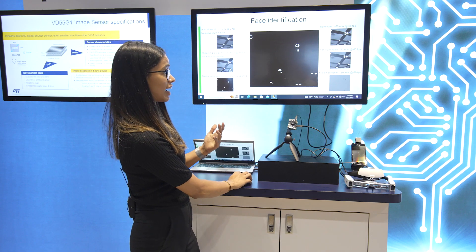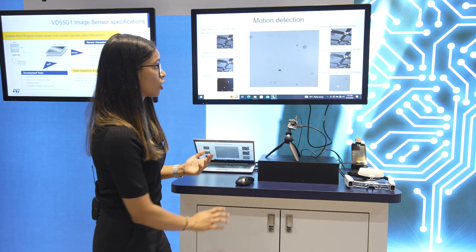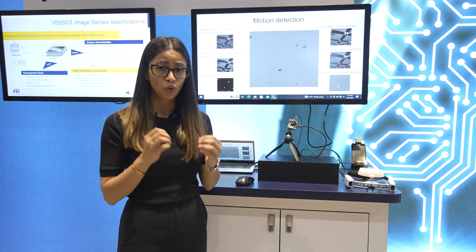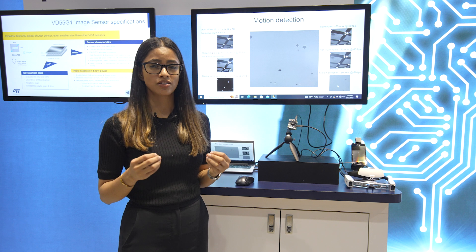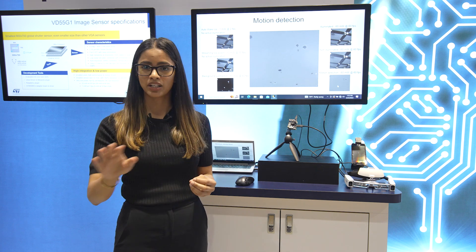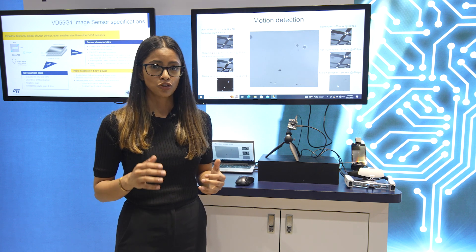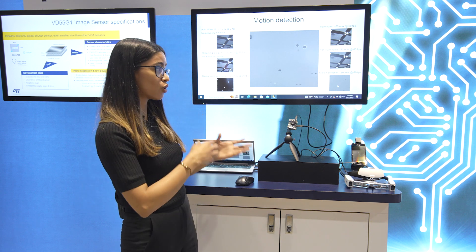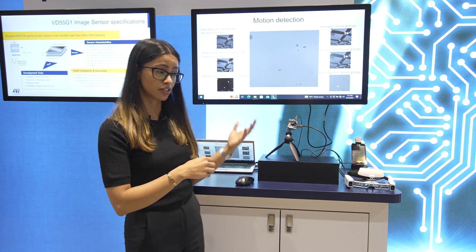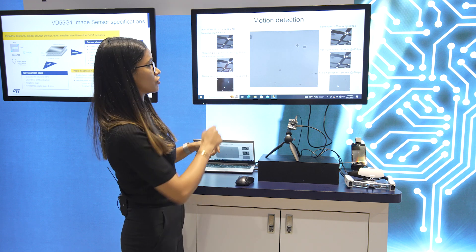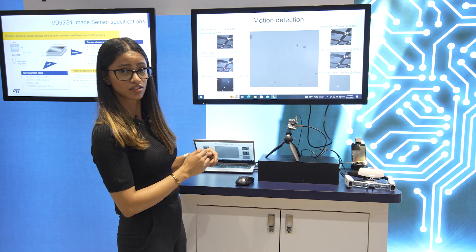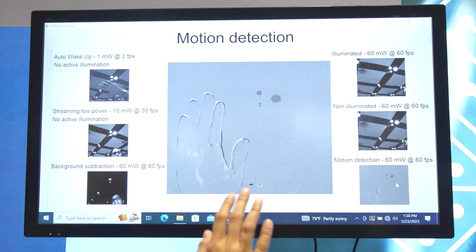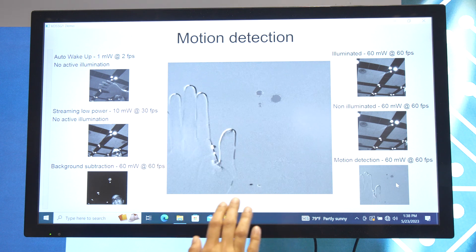Another feature is what we call differential mode. If you have an application where you only want to look for moving objects in your scene and not worry about any static objects, you don't have to do any additional processing or do it through software — this feature is available on-chip. Here's a quick example: right now, if there's no movement, the screen is gray. But as soon as I move my hand, it picks up my hand and only that part gets highlighted.